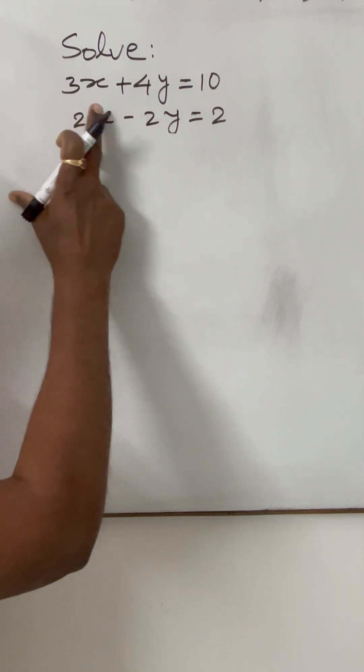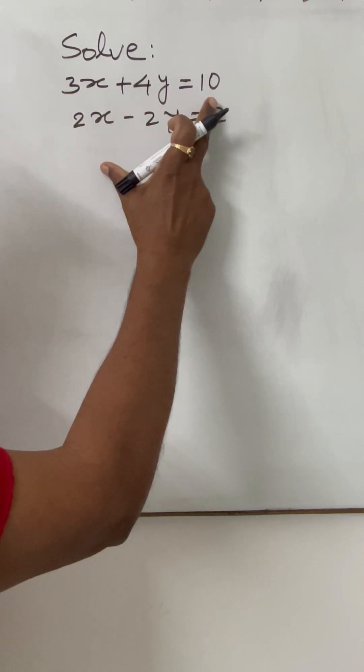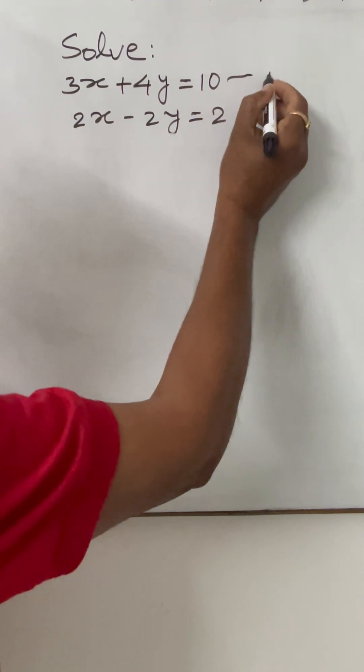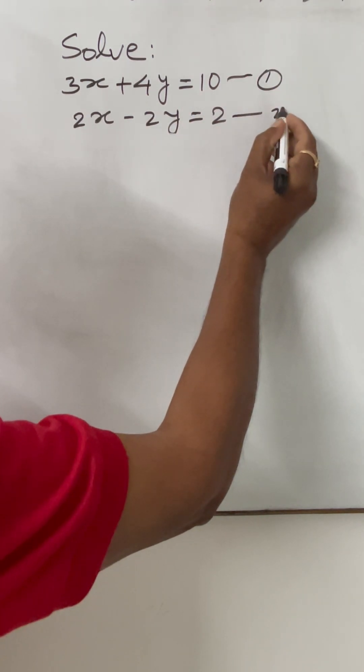Here we have to solve 3x plus 4y is equal to 10 and 2x minus 2y is equal to 2. This is equation number 1, this is equation number 2.